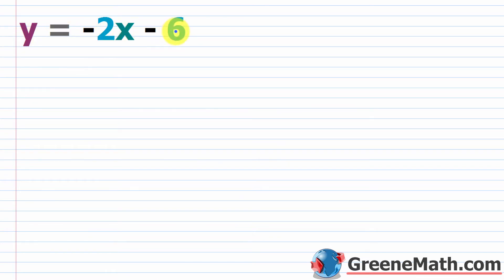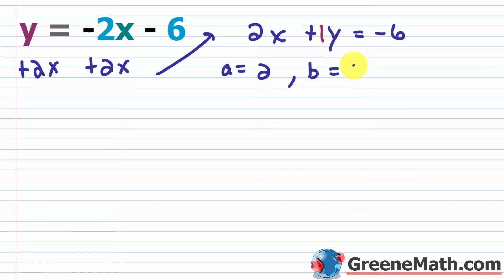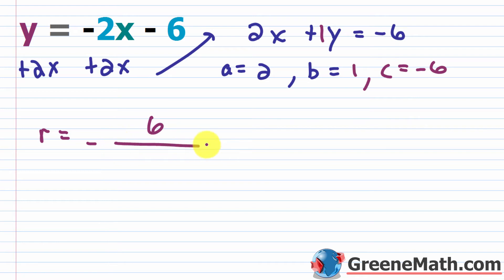Example 2: y = −2x − 6. Add 2x to both sides to get standard form: 2x + y = −6. So a = 2, b = 1, and c = −6. Plugging into the formula: r = −6 / (2·cosθ + sinθ). Using that formula is pretty quick once you have the coefficients identified.